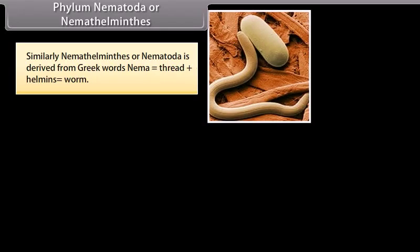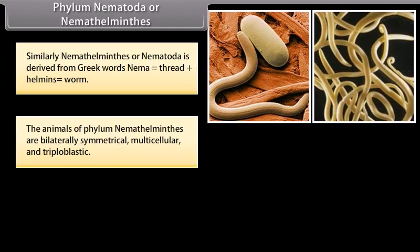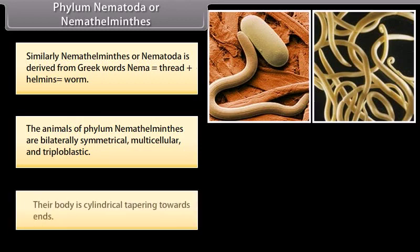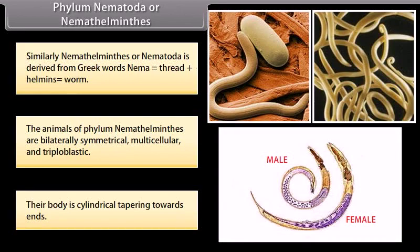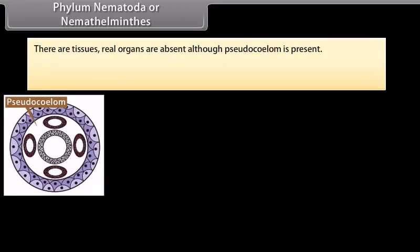Phylum Nematoda, or Nemathelminthes. Nemathelminthes, or Nematoda, is derived from Greek words: nema, meaning thread, plus helminthus, meaning worm. The animals of Phylum Nematoda are bilaterally symmetrical, multicellular, and triploblastic. Their body is cylindrical, tapering towards the ends. There are tissues, but real organs are absent, although a pseudocoelom is present.